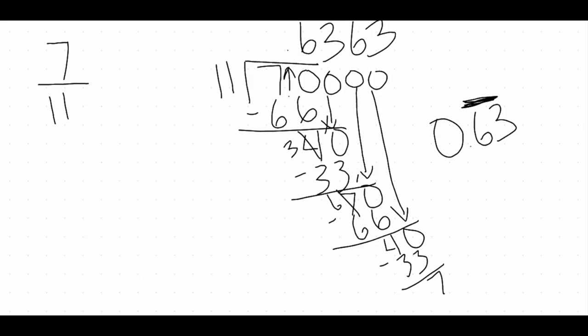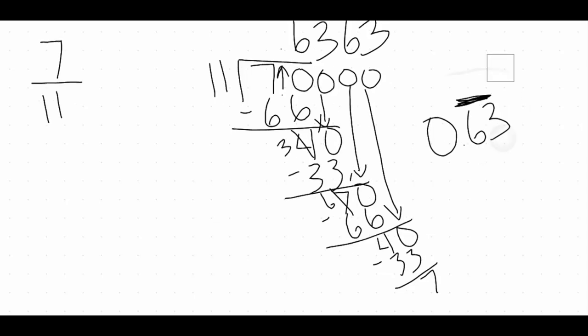We need to make sure that bar goes over both the 6 and the 3 — not just the 6, not just the 3. It's the 6 and 3 that continue to repeat. So our final answer is 0.63 with the bar over the 6 and 3.